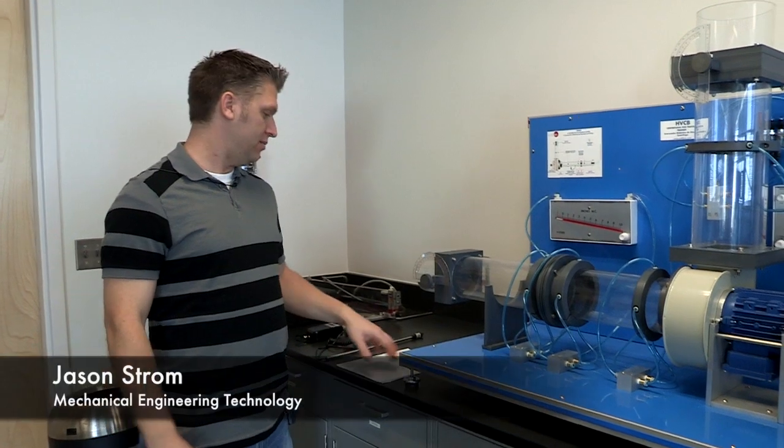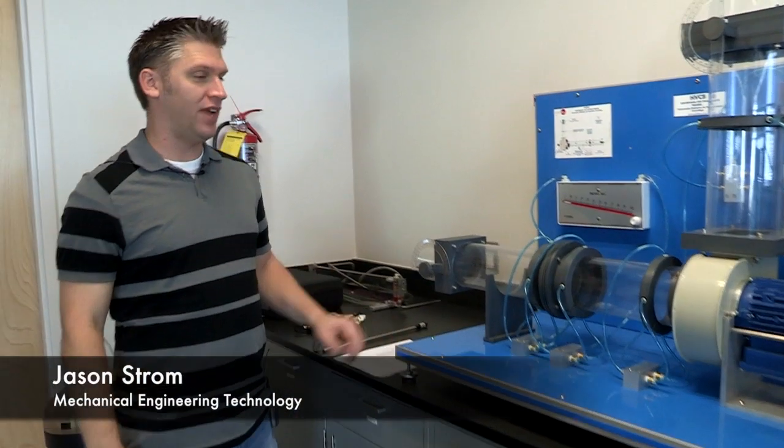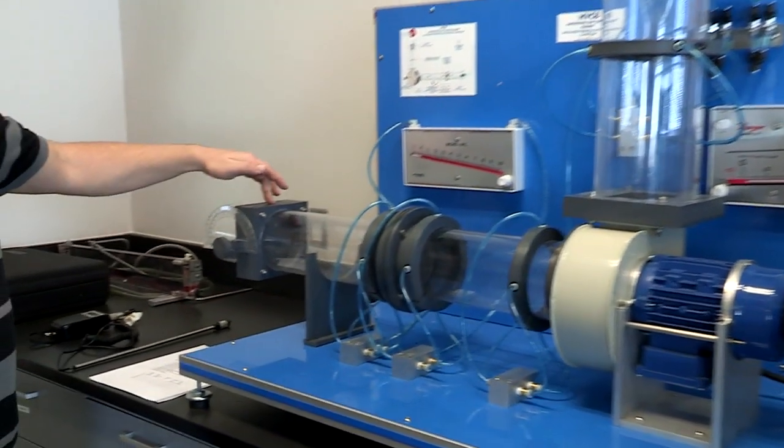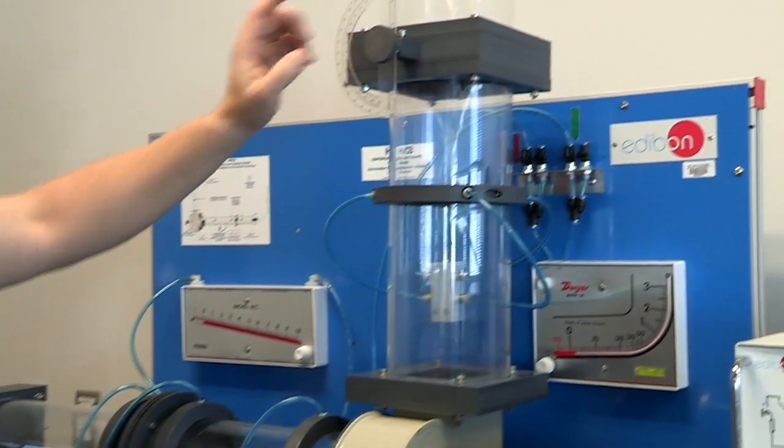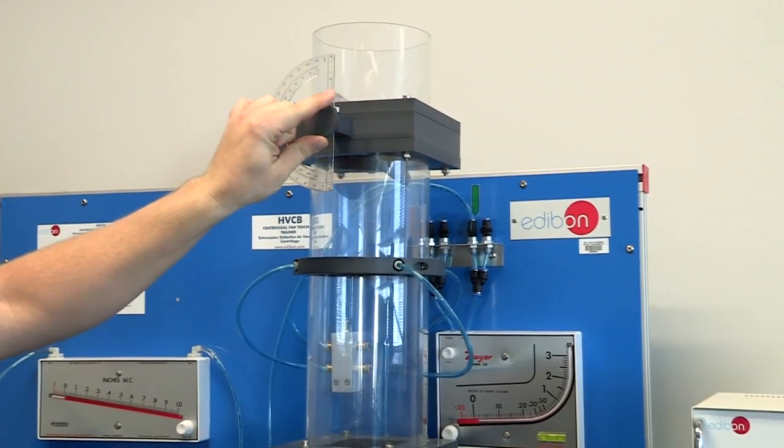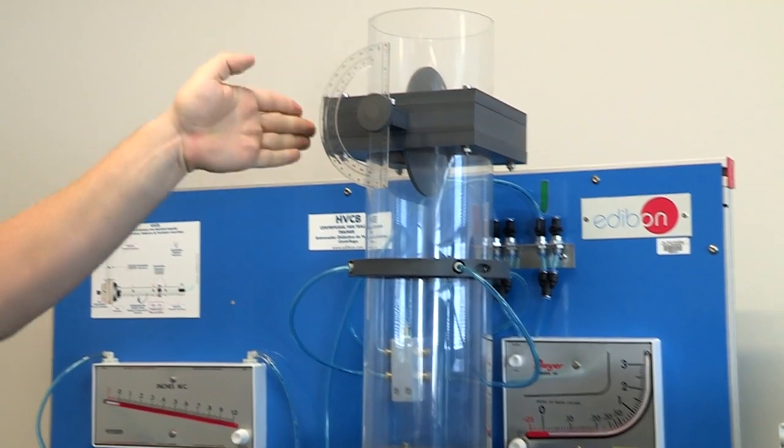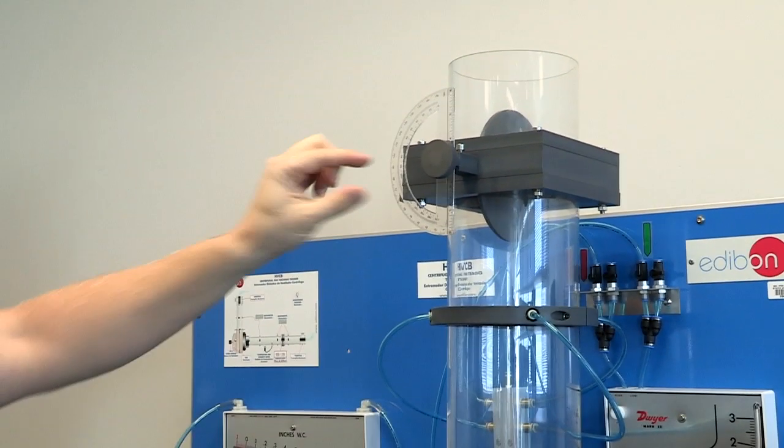Okay, this is our next lab, the centrifugal fan operations. What we're going to do first off is make sure that our inlet damper and our outlet are both open. Right now they are set to close, so we're going to turn it until we can see that it's completely vertical.